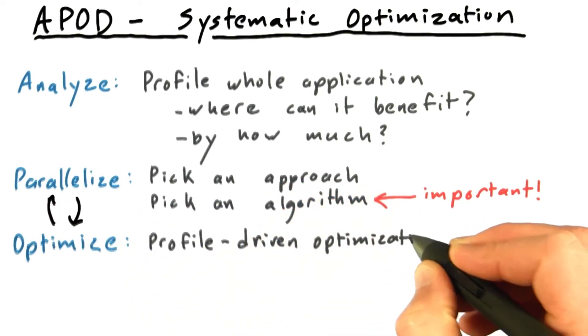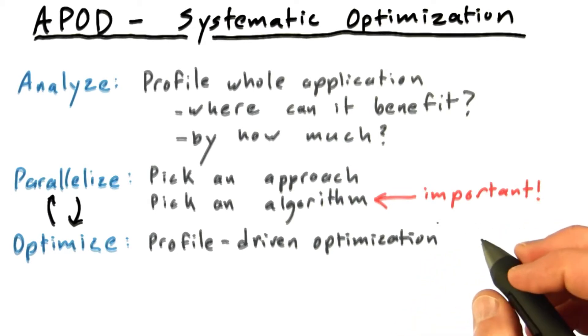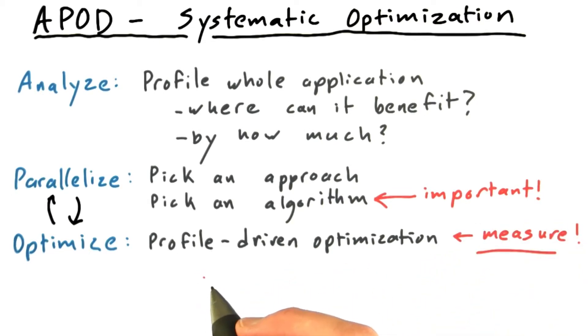We're really talking about profile-driven optimization, by which I mean measure it. Measure how fast things are going. Use that to base your decisions. Don't just take a guess at what's going to work well and what doesn't.